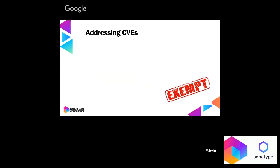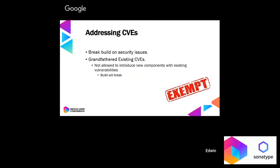We then started a journey on how to address the security issues we had discovered. The first thing we did was put lifecycle into our pipeline and configure it to break the build on security issues. Since we had existing security issues, we grandfathered the existing CVEs to prevent any new components with existing vulnerabilities from being introduced. Back in 2015, grandfathering wasn't a feature, so the way we did it was by modifying the policies themselves to include the components and CVEs to exclude them.